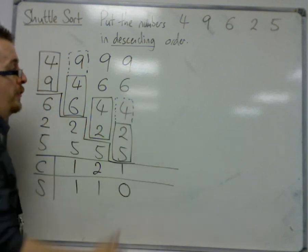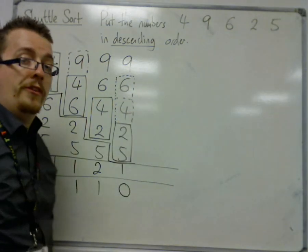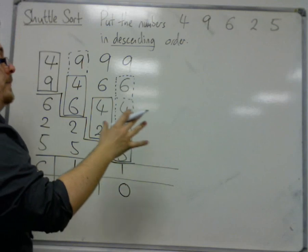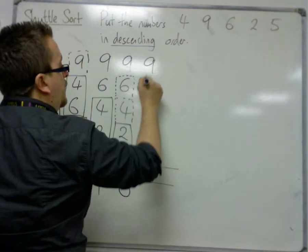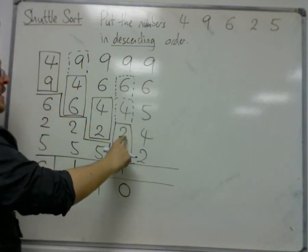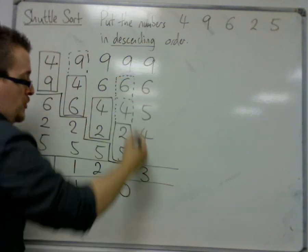That creates another swap, so I must then compare the 5 with the 6. The 6, however, is larger than the 5, so that fixes the 5 in place. So I made one comparison, two comparisons, three comparisons, and two swaps.